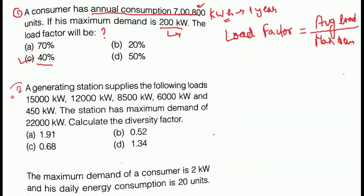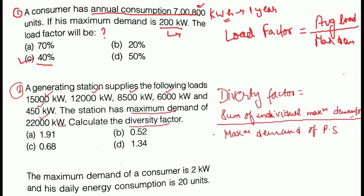Next is question number 2. A generating station supplies the following loads: 15,000 kilowatt, 12,000 kilowatt, 8,500 kilowatt, 6,000 kilowatt and 450 kilowatt. The station has a maximum demand of 22,000 kilowatt. Calculate the diversity factor. So the generating station supplies 5 separate loads and its maximum demand is 22,000 kilowatt.